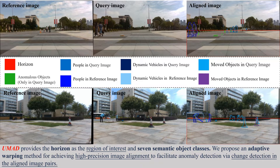UMAD provides the horizon as the region of interest in seven semantic object classes. We propose an adaptive warping method for achieving high-precision image alignment to facilitate anomaly detection via change detection in the aligned image pairs.